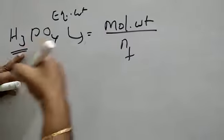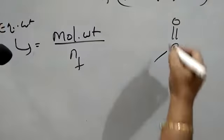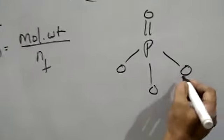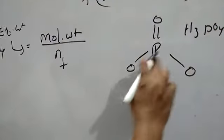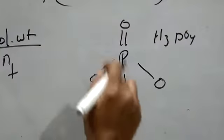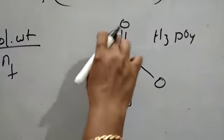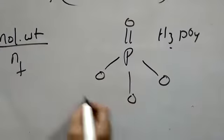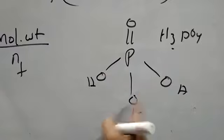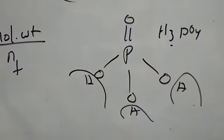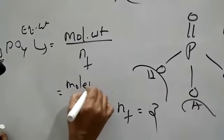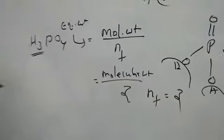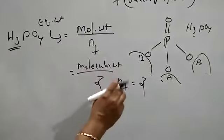What is the N-factor for H3PO4? The replaceable hydrogen is 3. Phosphorus valency is 5. You put P at the center with 4 oxygen around it — that's the structure of H3PO4. All 3 hydrogens are replaceable, so N-factor equals 3. Therefore equivalent weight equals molecular weight divided by 3. The basicity of this acid is 3.